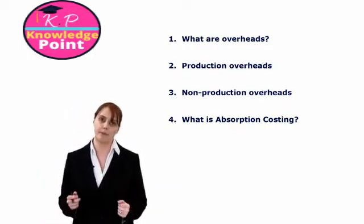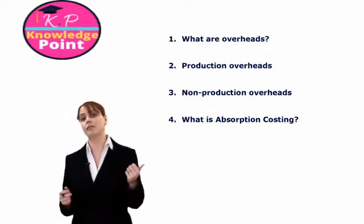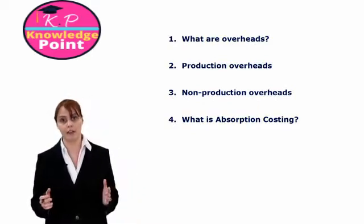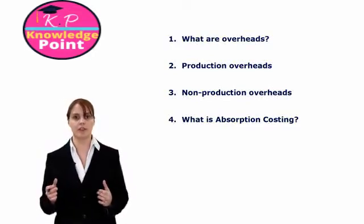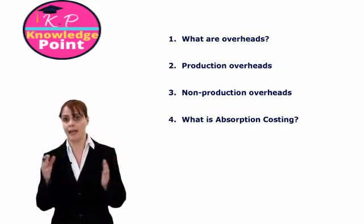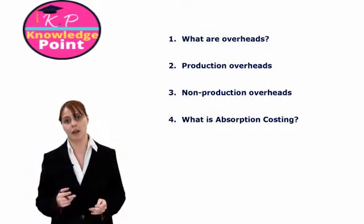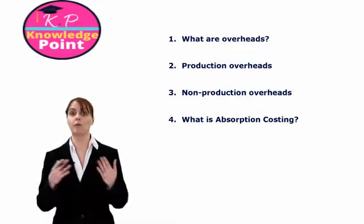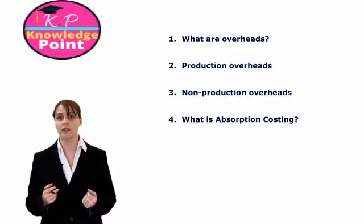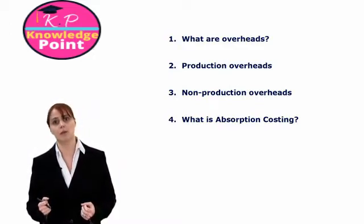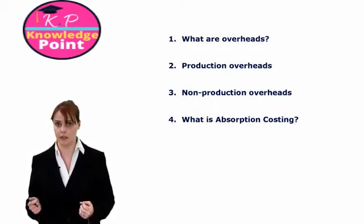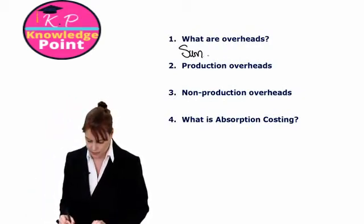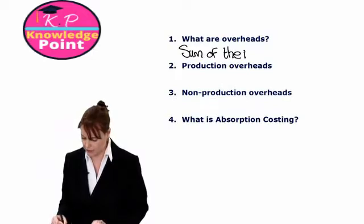So our indirect costs, for example, might be our head office administration costs. It might be the power cost for our factory. It's very difficult for us to calculate how much we spend on each of our indirect costs in the production of one unit of our product. And a reminder of our terminology, the sum of our indirect costs is equal to our overhead costs. So we'll just note that down. What are overheads? It is the sum of the indirect costs.